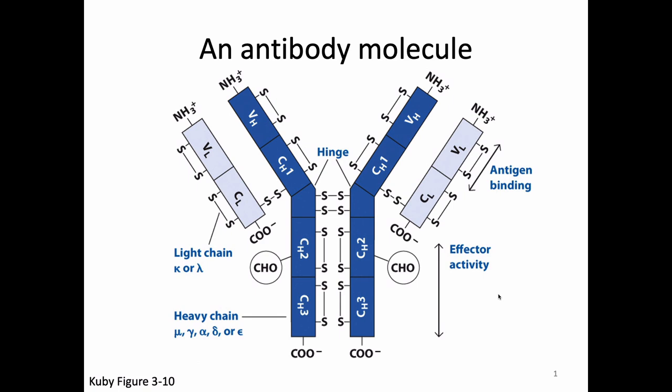Today we're going to continue talking about antibodies and hit a bunch of different important pieces of info. Last time we talked about the heavy chain and the light chain, the immunoglobulin domain, where there were disulfide bonds. We saw the antigen binding areas in the FAB, the FC portion, and the hinge.